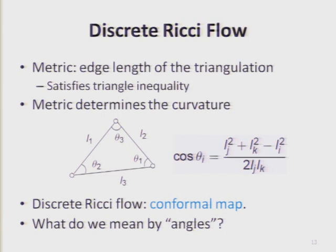When we say the metric of the shape, it actually means the edge lengths of the triangulation. If I give you a triangulation, for each edge I specify a length. All these lengths should satisfy the triangle inequality to be valid. Given a triangle with the edge lengths of the three edges, the shape of the triangle is uniquely determined — all the corner angles are fixed. Given these edge lengths, because the corner angles are fixed, the curvature of every vertex is fixed by the metric. For discrete Ricci flow, I need to change the edge lengths to change the corner angles so that the curvatures meet my target curvature.